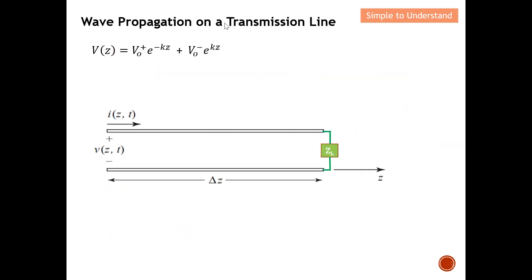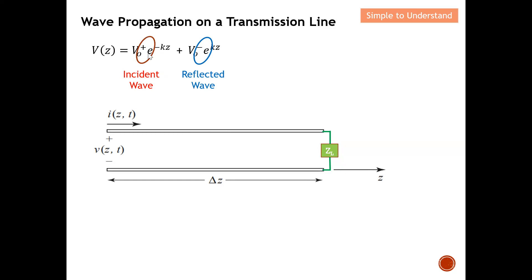Let's understand wave propagation on the transmission line. V(z) means the voltage at any point on the transmission line, governed by this equation. This part here we call the incident wave, and this part here we call the reflected wave. You probably ask: how can we know which is the incident wave and which is the reflected wave? Let's take a deeper look to understand that.